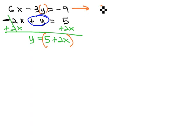So the other equation is 6x minus 3y, which we're going to replace with 5 plus 2x equals negative 9. And then we can start solving this equation, like always, by distributing the 3 through.